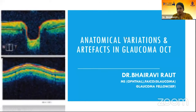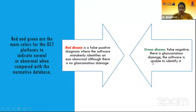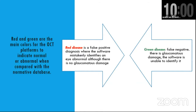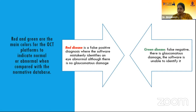I'll be presenting on anatomical variations and artifacts in glaucoma. Artifacts are mainly classified into two types: red disease, which is a false positive diagnosis where the software mistakenly identifies an abnormal eye although there is no glaucomatous damage, and green disease, which is a false negative where glaucomatous damage is present but the software is unable to identify it.